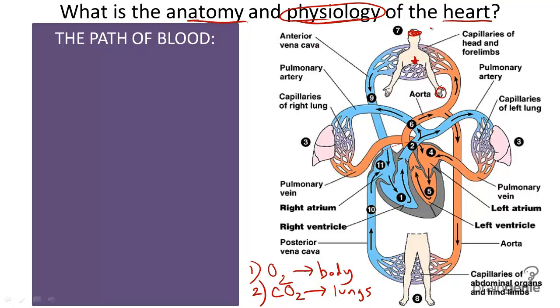So, the heart is actually a hollow organ. You can see it spliced in half here, with four rooms. These rooms are also called chambers.